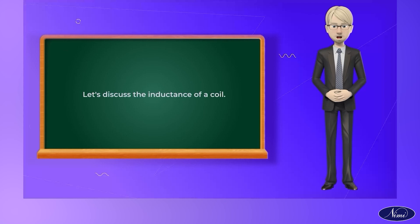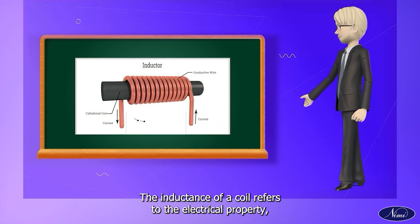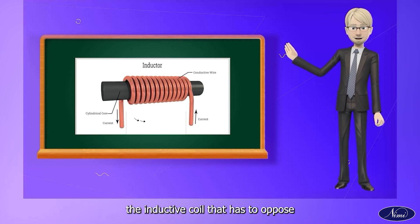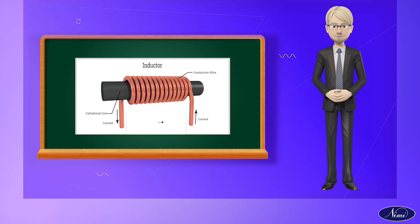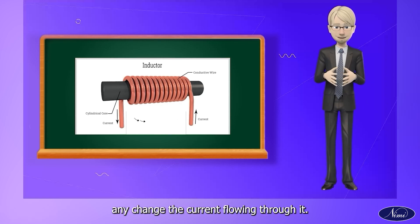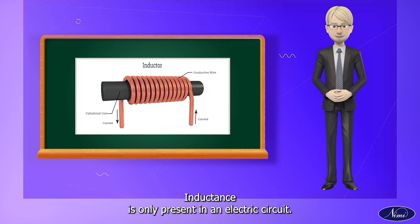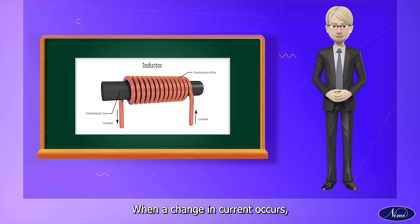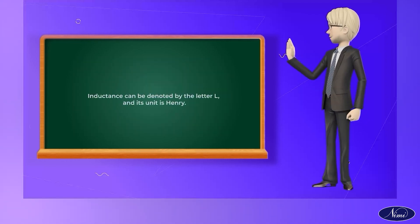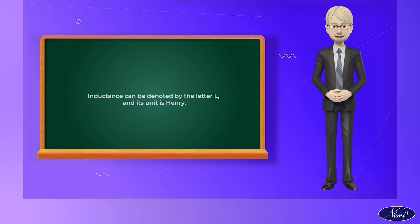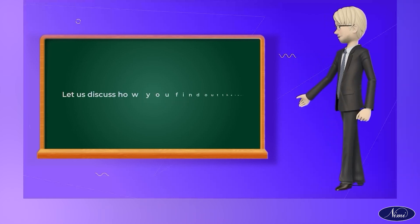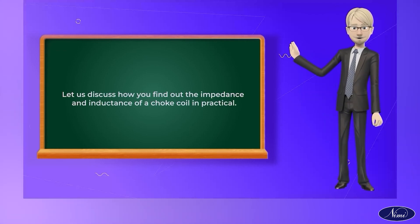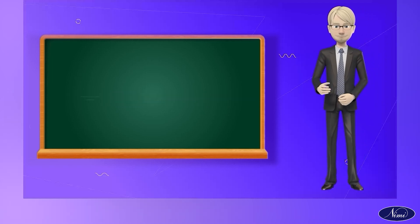The inductance of a coil refers to the electrical property of an inductive coil that opposes any change in the current flowing through it. Inductance is only present in an electric circuit when a change in current occurs. Inductance is denoted by the letter L and its unit is Henry. Let us discuss how to find the impedance and inductance of a choke coil in practice.